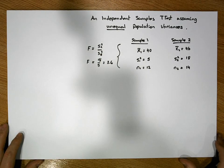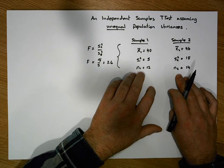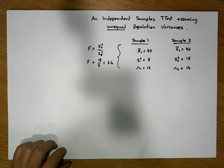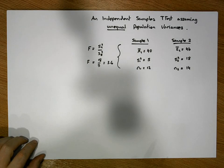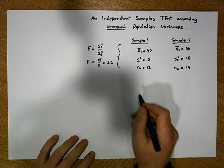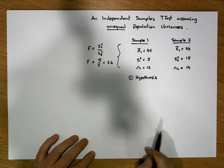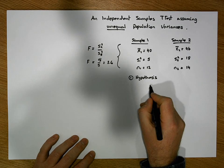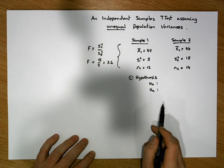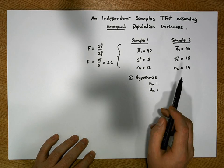What we'd like to do now is test whether there's evidence to suggest that these two samples have been drawn from populations with different population mean values. We need to undertake a hypothesis test, which follows a five-step process. The first step is to define the hypothesis — a statement about the population parameters, in this case the population means.